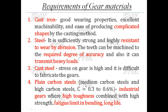Next is plain carbon steel, which is further classified as medium carbon steel and high carbon steel depending on the percentage of carbon. In plain carbon steel, the carbon content is 0.3 to 0.6 percent. This material is suitable for industrial gears where high toughness combined with high strength, fatigue-limiting bending, and long life are required. Other materials are also used by adding alloying elements like molybdenum and chromium for special applications, and a wide range of materials are available for manufacturing gears.